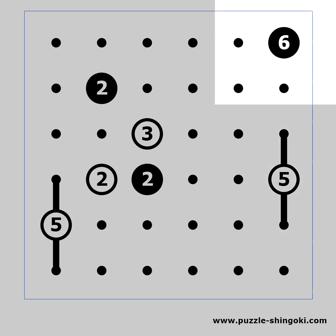The loop must turn upon the black circles, and this 6 is in the corner. The only possible way is this.